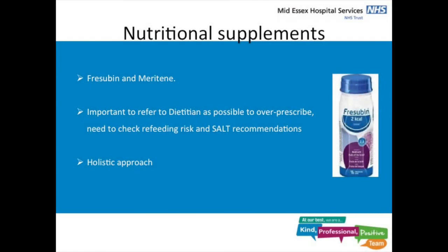The second-line approach, if a patient is malnourished or not meeting requirements, is nutritional supplements. We have Fresubin and Meritene in this hospital. Meritene isn't prescribable — it's available from the kitchen. It's important to discuss with us and refer to the dietitians, because you can over-prescribe if the patient is at refeeding risk. There are also specific supplements we might choose, for example looking at fibre or volume to make sure we get the best one for the patient.